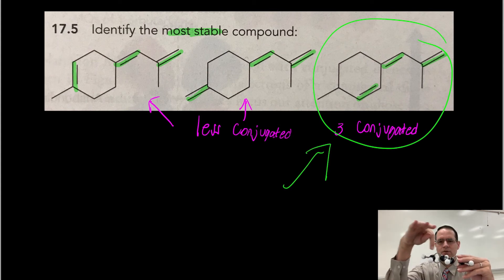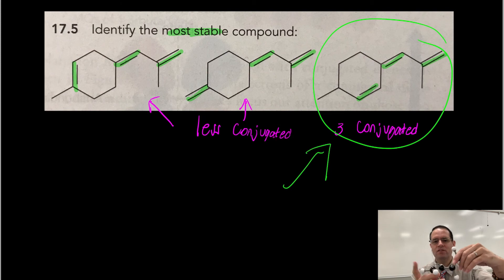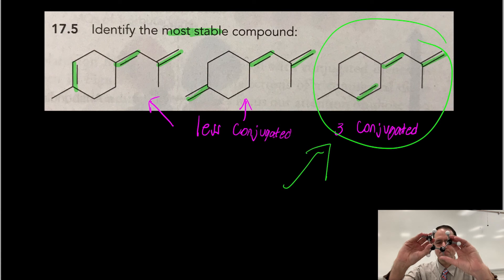In order for these two pi bonds to be conjugated, they have to be coplanar. They have to be in the same plane. If this is twisted 90 degrees, this p orbital that makes up this pi bond and this p orbital that makes up this pi bond are now no longer coplanar and it's not going to be efficiently conjugated.